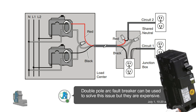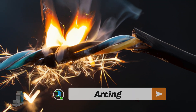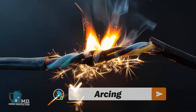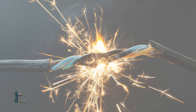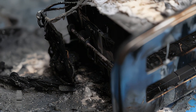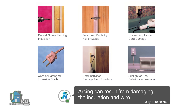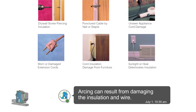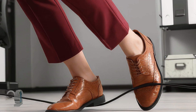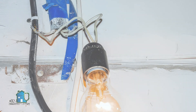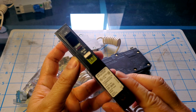Finally, there is dangerous arcing. Arcing is a luminous discharge of electricity resulting in extremely high temperatures that can ignite materials around the wire, causing a fire. Arcing can result from punctured cables from staples, screws piercing a wire, damaged wires, or extension cords — particularly vulnerable from careless use such as walking over them. Arcing from loose connections is also a common problem.